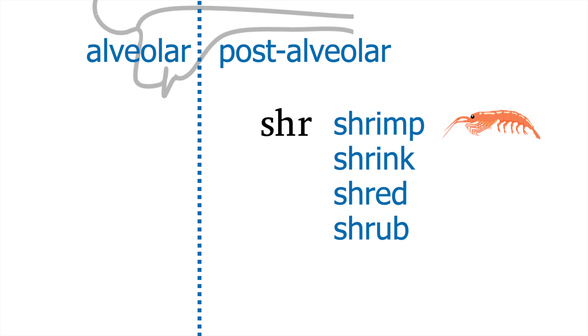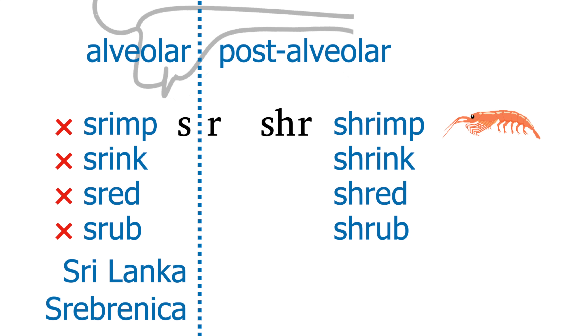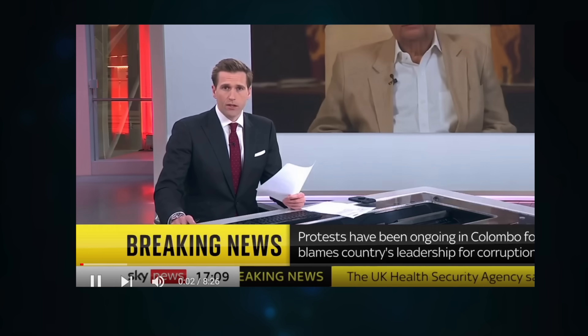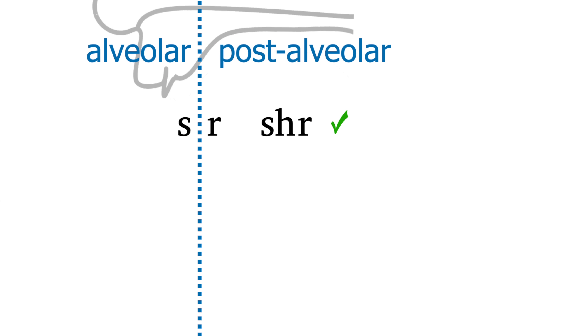But English has no words beginning S-R — no 'srimp,' 'srink,' 'sred,' 'srub,' etc. In fact, when English speakers see words starting SR, like these, they generally just pronounce them as though they were written S-H-R, which happens to be fairly accurate for the former but not the latter. We English speakers are more comfortable keeping the whole cluster post-alveolar — we'd rather not have to slide the tongue quickly from S to R.